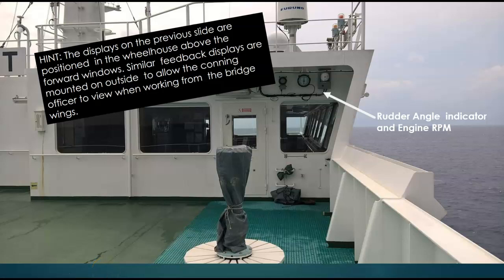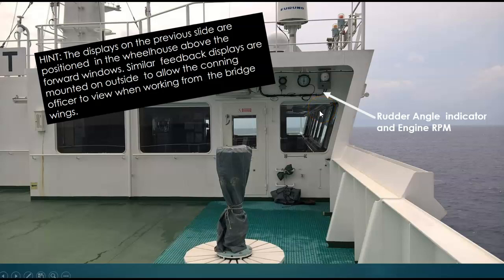This is on a bridge wing of a ship. We are looking from the port bridge wing in towards the wheelhouse, and we can see that there are rudder angle indicators and engine RPM indicators out here on the bridge wing, so that the people conning the vessel can see them when they're working from outside the wheelhouse. These are duplications of the displays. The displays on the previous slide are in the wheelhouse above the forward windows. Similar feedback displays are mounted outside. Check that out on the State of Maine and you'll see that.